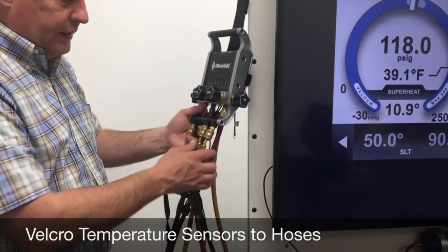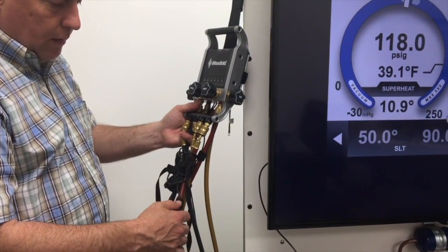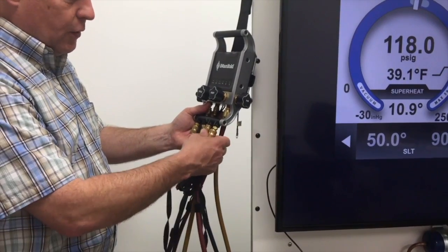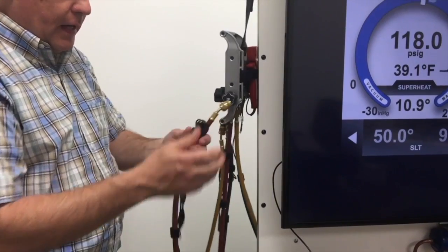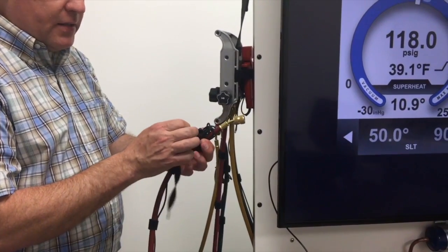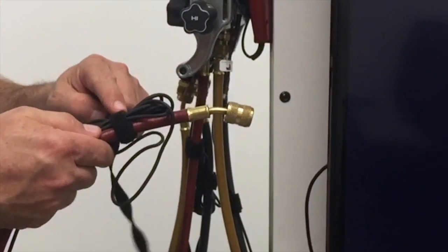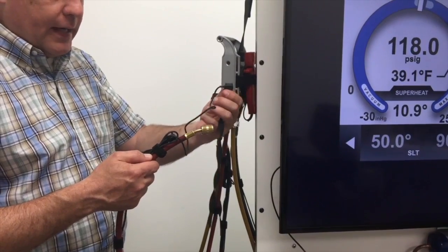All right, so the first thing you'll notice is when I set up my Imanifold, I Velcro my temperature sensors right to my hoses. The reason I do that is so when I take off this hose set, if I have the high side probe, I also have the high side sensor. I Velcroed the bulk of the excess wire right to the hose here, and I have just enough that I can work with.